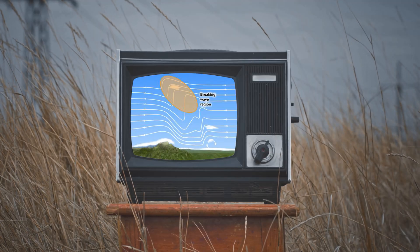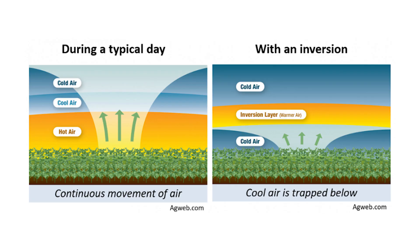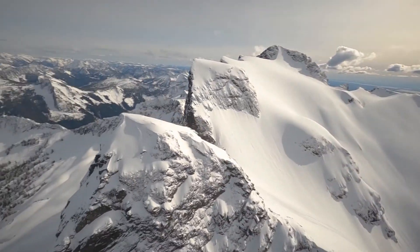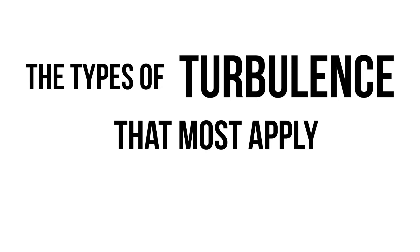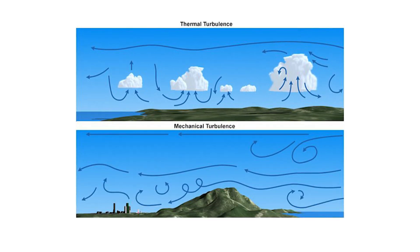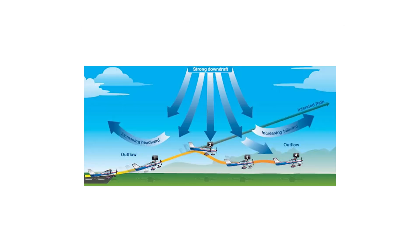There are many forms of turbulence, such as clear air, temperature inversions, thunderstorms, etc., but most of these only apply up at higher altitudes than what most RC folks would be flying at, unless you're a daredevil. The types of turbulence that most apply to RC are thermal turbulence, mechanical turbulence, and wind shear.